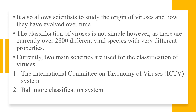However, the classification of viruses is not simple, as there are currently over 2800 different viral species with very different properties. At present, two main schemes are used for the classification of viruses: the International Committee on Taxonomy of Viruses system and the Baltimore classification system.